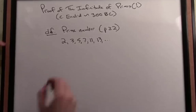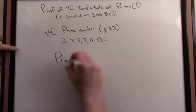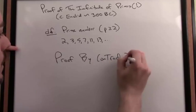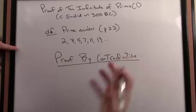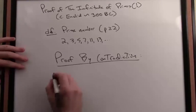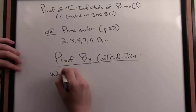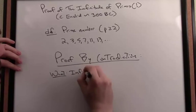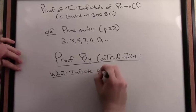Now the proof technique we're going to use is something called proof by contradiction. What we want to do is prove the assertion that there are an infinite number of primes.